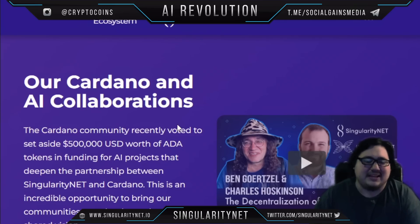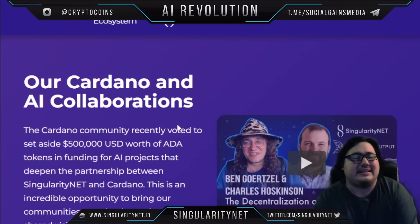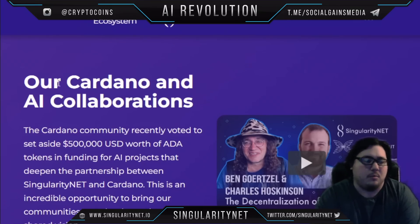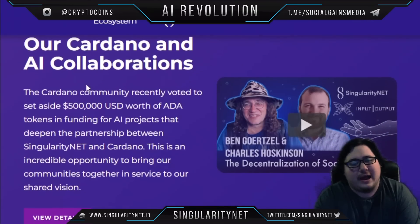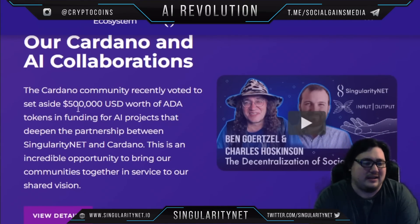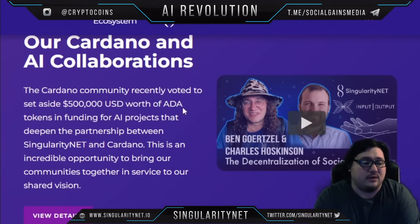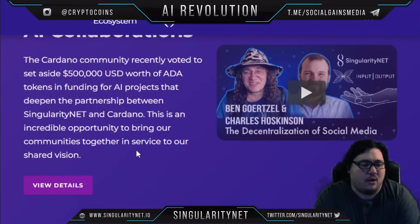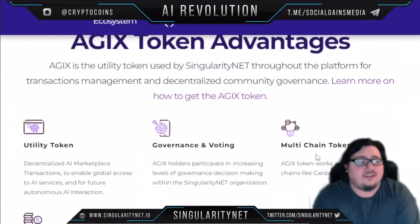This is one of the most promising decentralized AI projects out there. As you can see, their community recently voted to set aside five hundred thousand dollars worth of ADA tokens in funding for AI projects that deepen the partnership between SingularityNET and Cardano — which is an incredible opportunity.